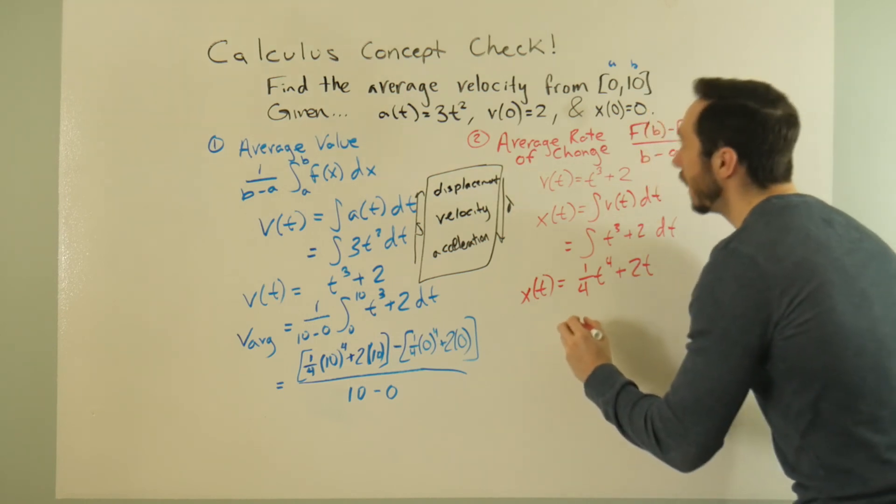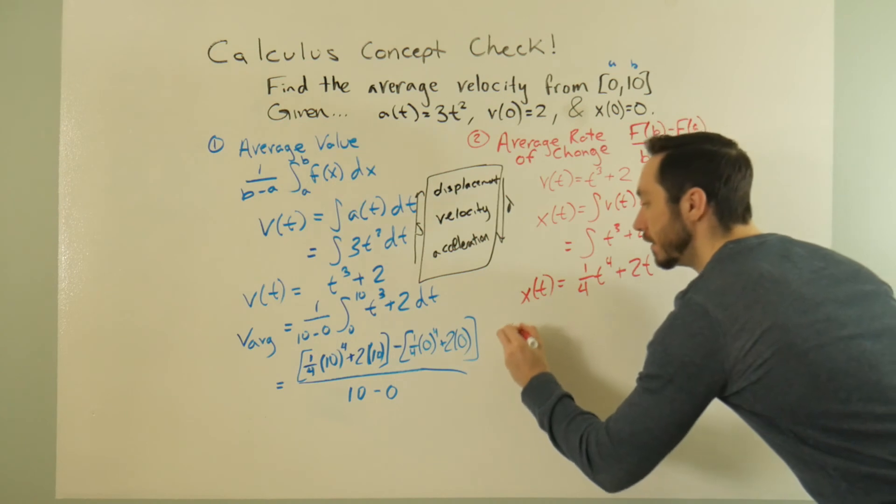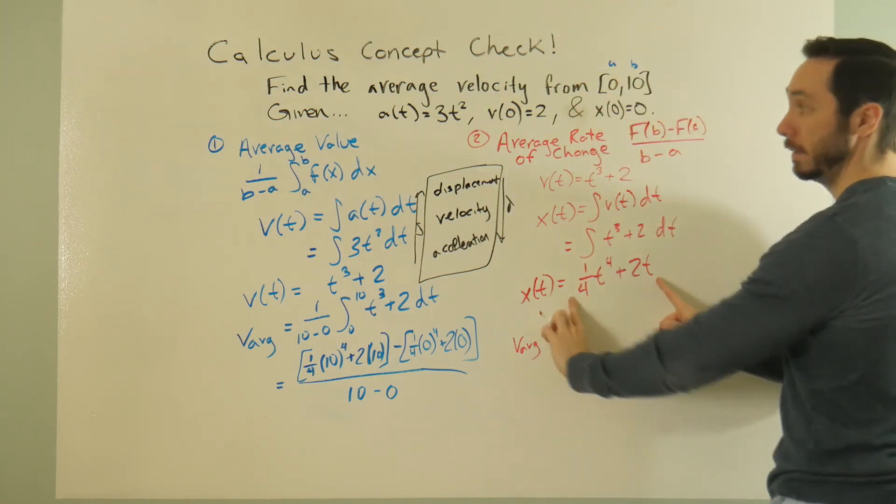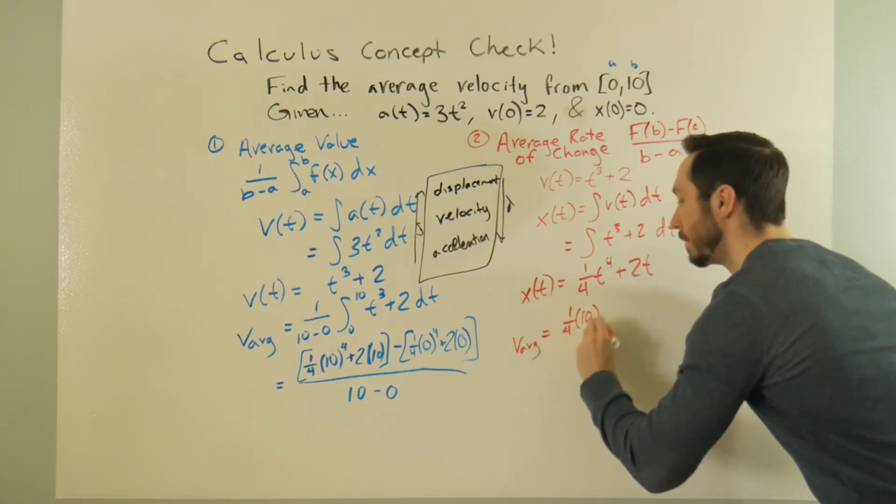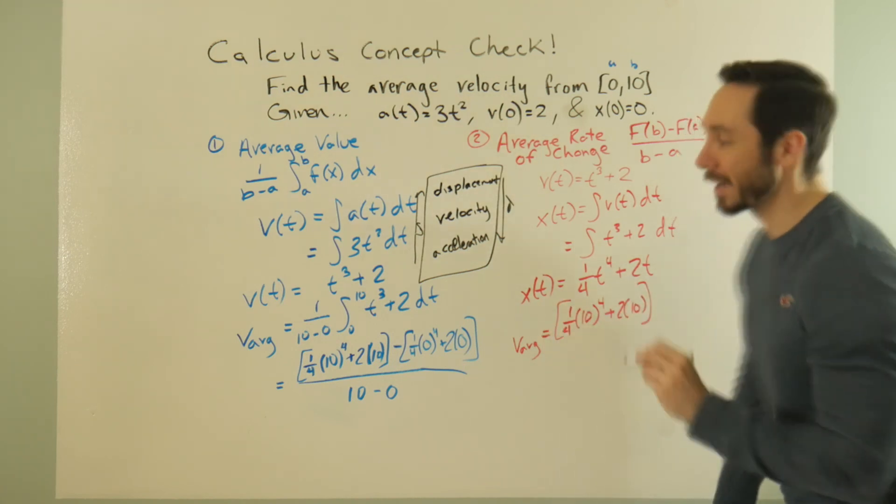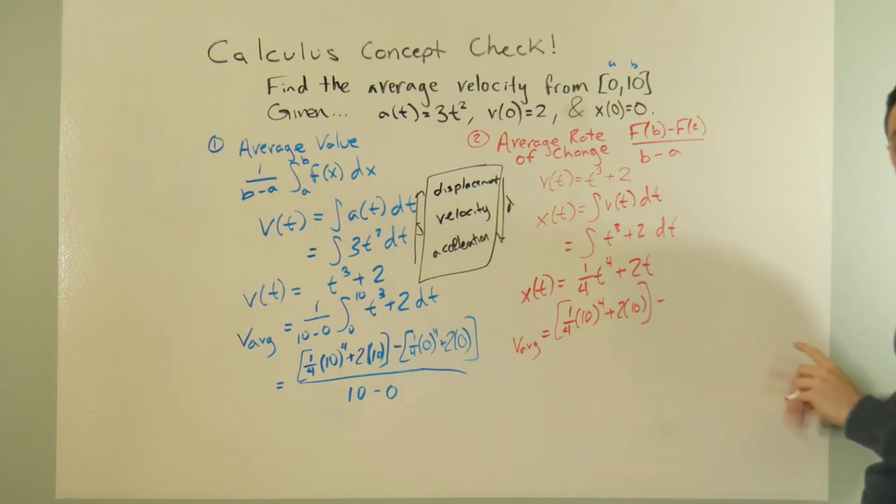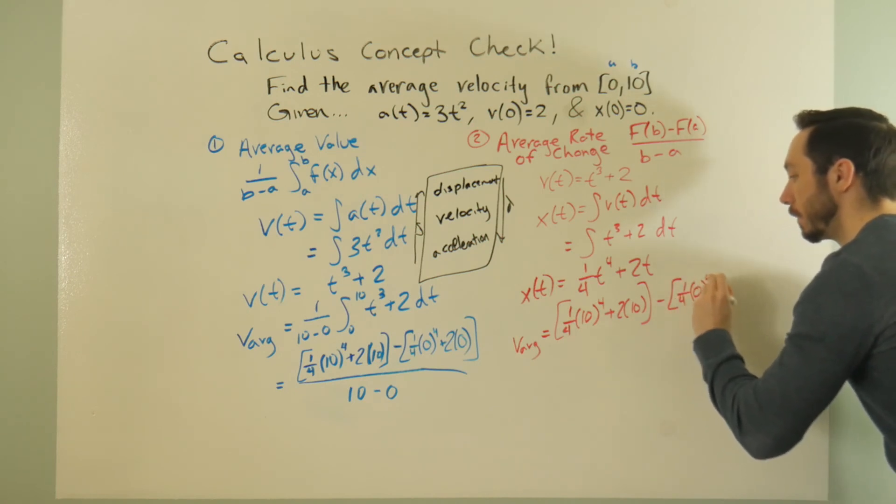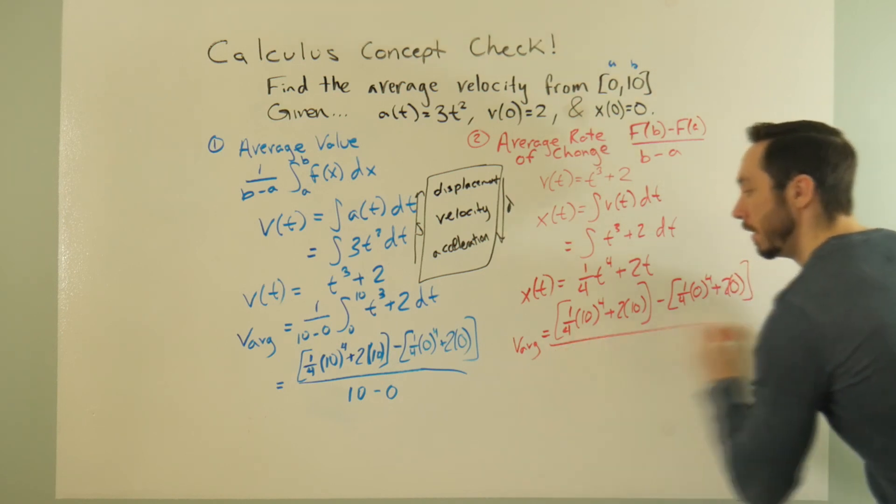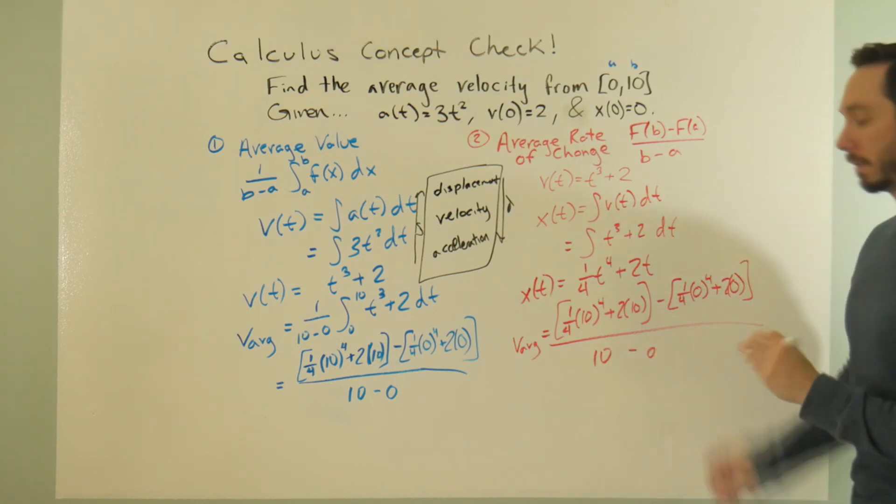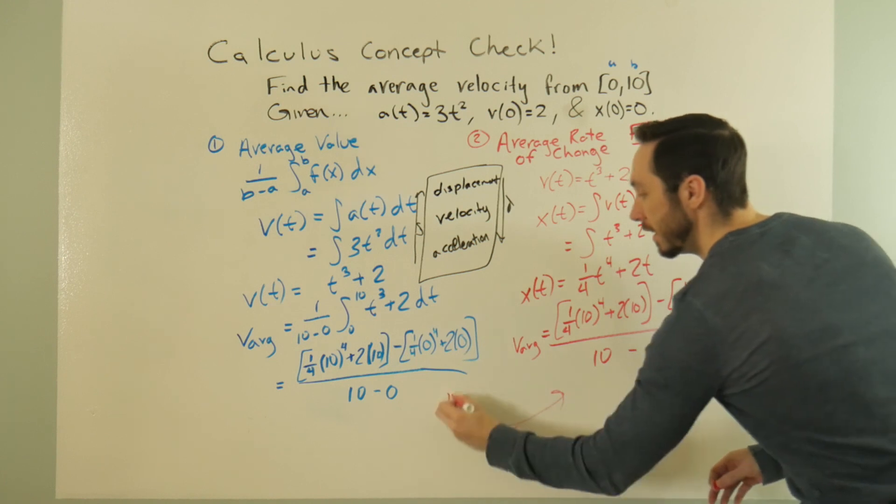Hopefully you're seeing something here. When I'm playing around with this average velocity, I guess I can write it as v sub average again. Plugging in 10, because that's my b value, into my displacement function, I have 1 fourth times 10 to the fourth plus 2 times 10. And I'm intentionally not simplifying because hopefully you're seeing what I'm seeing at this point. I plug in zero and I'm kind of running off the board a bit. I end up getting 1 fourth 0 to the fourth plus 2 times 0. This is all going to be over b minus a, b is 10, a is 0. Hey, wait a minute. These things are the same.